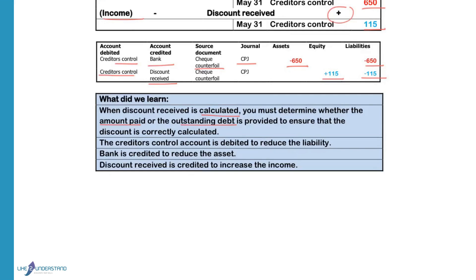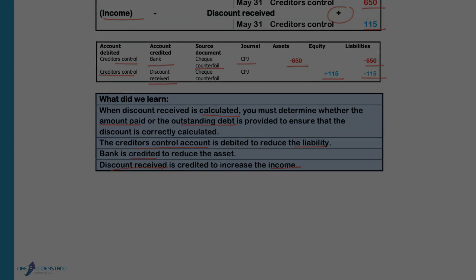The creditors control account is debited to reduce the liability with the amount paid and the discount. Bank is credited to reduce the asset with the amount paid out of the bank. Discount received is credited to increase the income so that profits can increase.